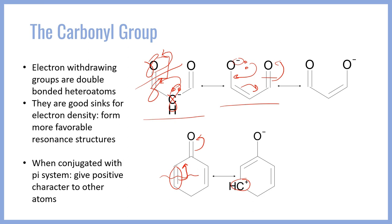We have robbed it of an electron pair and it will now carry a formal positive charge. The oxygen, being the electron acceptor — the electron withdrawing group — is now going to be formally negative.